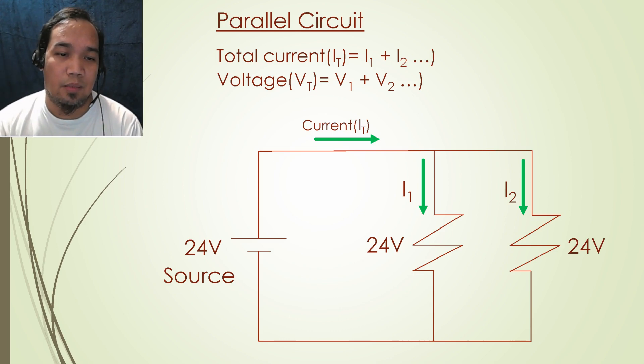In parallel circuit, the voltage is the same across the resistances, while the total current can be calculated by adding each current as illustrated here.